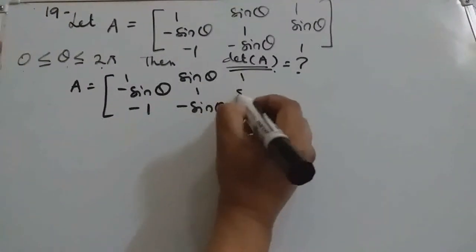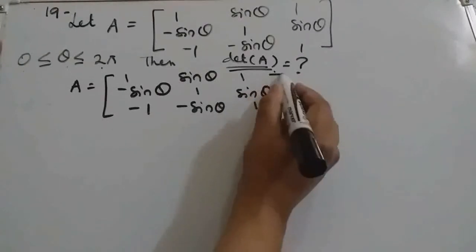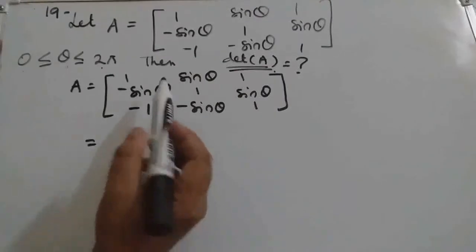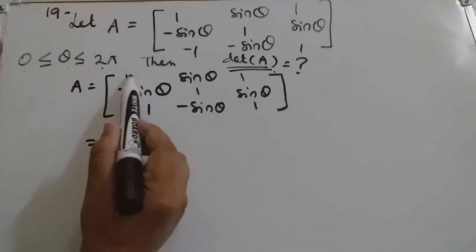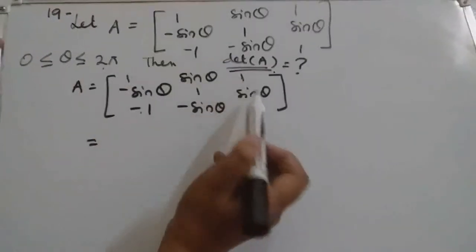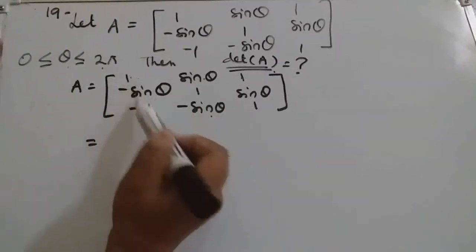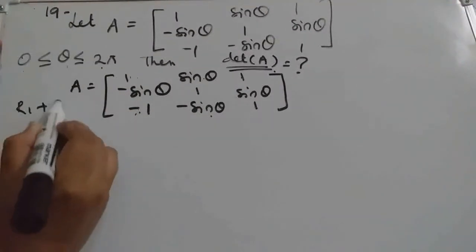We can directly expand or after using property we will make zeros here and then we can expand. See 1 minus 1 means 0, 1 minus sin theta minus sin theta means 0. That means we should add R1 and R3.